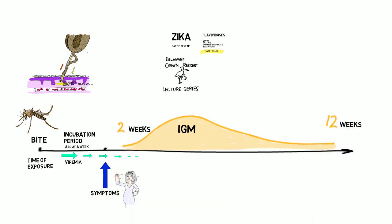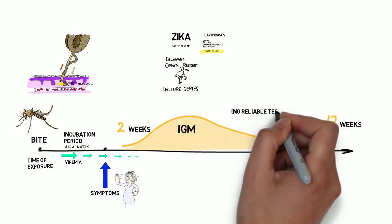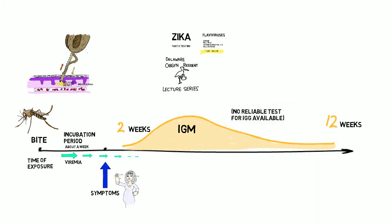The persistence of IgM antibodies is variable, but they are usually present from 2 to 12 weeks after the illness. Currently, there is no reliable method for the determination of IgG. Infection or vaccination with one flavivirus can cause a bump in titers of antibodies to other flaviviruses the patient may have been exposed to. For example, a person vaccinated against yellow fever can increase titers to yellow fever when infected with Zika. This can make it difficult to figure out which virus caused the recent infection. Additionally, the test for IgM is an ELISA test which has cross-reactivity with other flaviviruses.